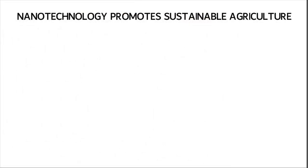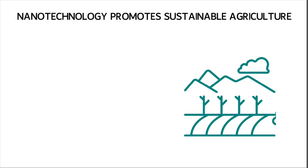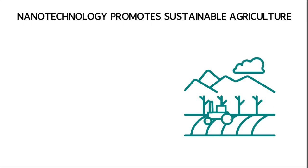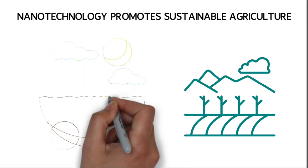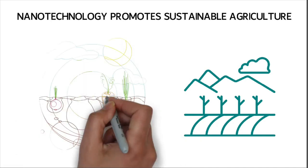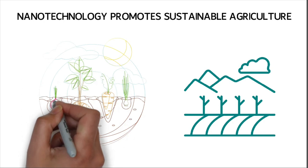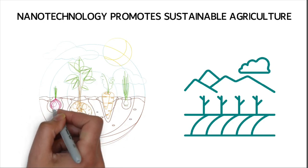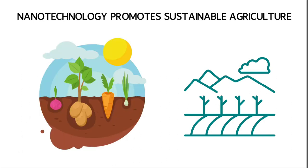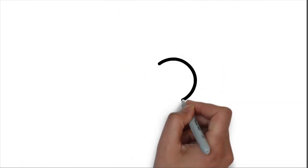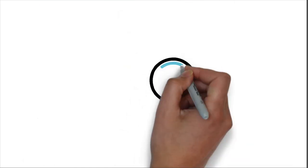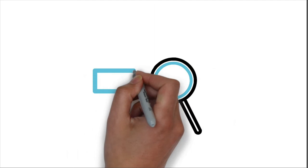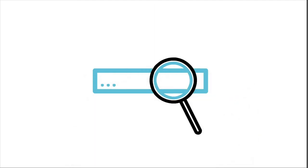Nanotechnology Promotes Sustainable Agriculture. Nanotechnology applications can increase crop productivity while reducing environmental pollution. The use of nanotech concepts in farming and livestock keeping can improve food security in the world. Nonetheless, more research needs to be done on nanoparticles. This will help scientists avoid possible complications that may result from the use of nanomaterials.